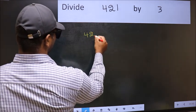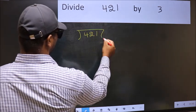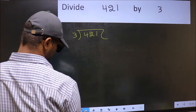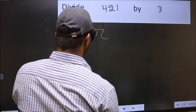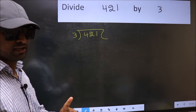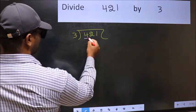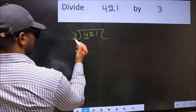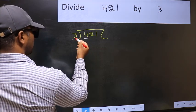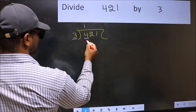421 and 3 here. This is your step 1. Next, here we have 4 and here 3. A number close to 4 in 3 table is 3 1's 3.